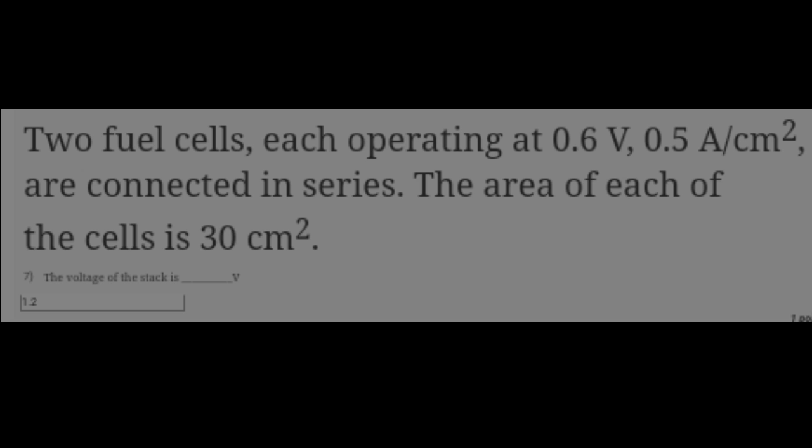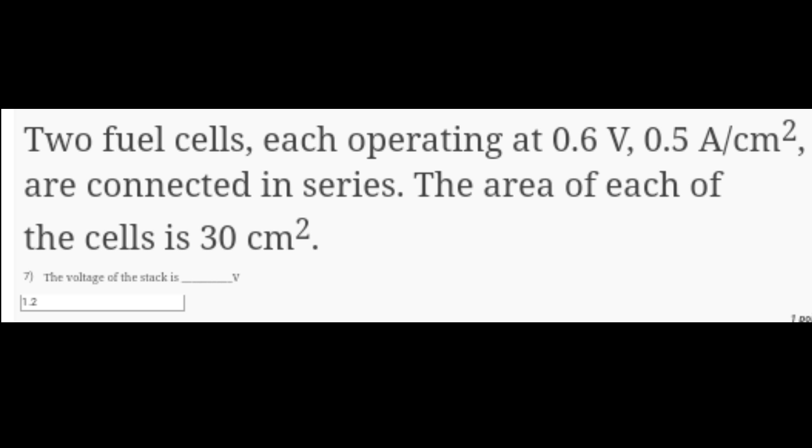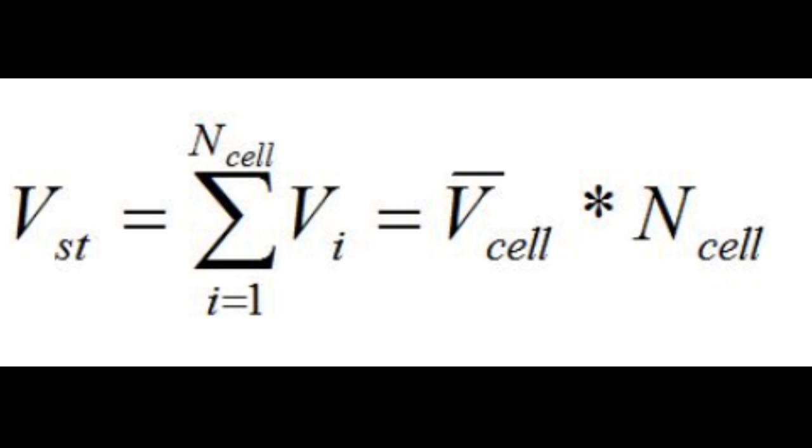Common text for questions 7 and 8: Two fuel cells each operating at 0.6 volt and 0.5 ampere per centimeter square are connected in series. The area of each cell is 30 centimeter square. Question 7: The voltage of the stack is 1.2 volt. Voltage for a stack equals voltage of cell times number of cells. We have 0.6 volt and two cells, so 2 times 0.6 equals 1.2 volt.